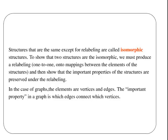To show that two structures are isomorphic, we must produce a relabeling, as in show the correspondence like we have done previously. One to one onto mappings between the elements of the structures. And then show that the important properties of the structures are preserved under labeling.